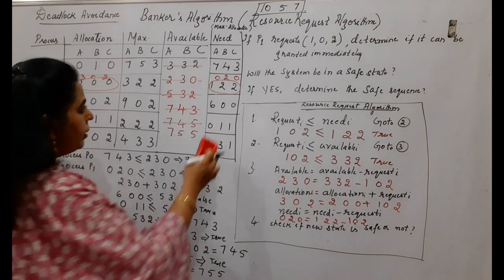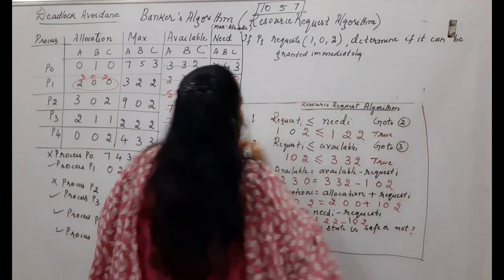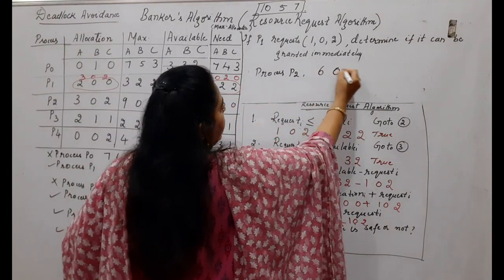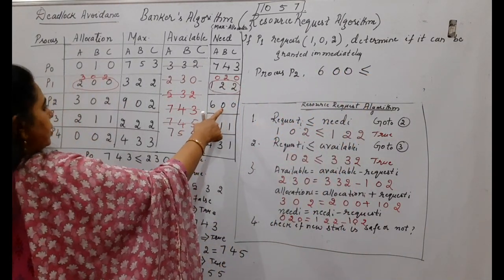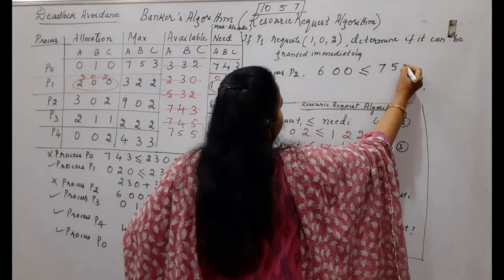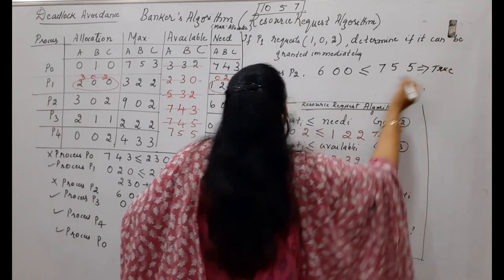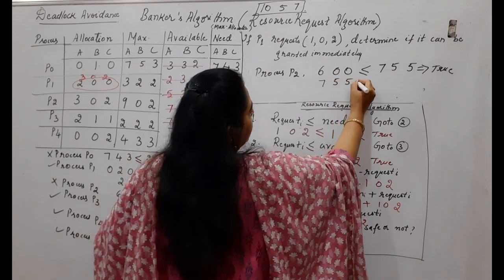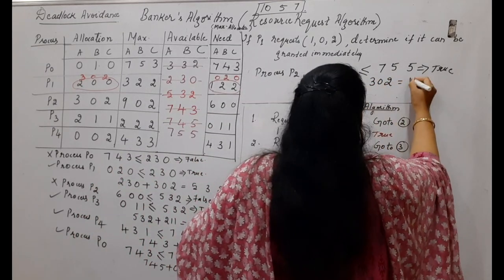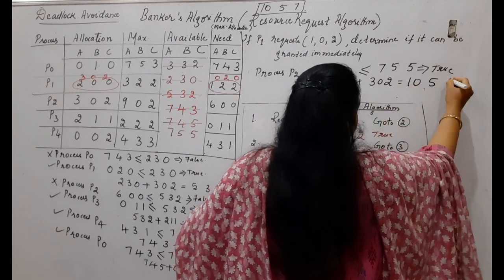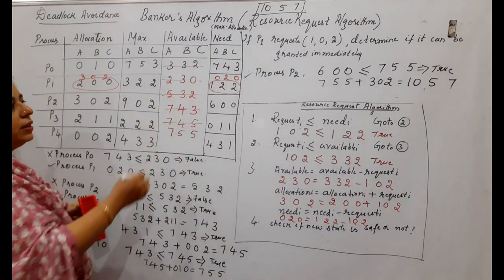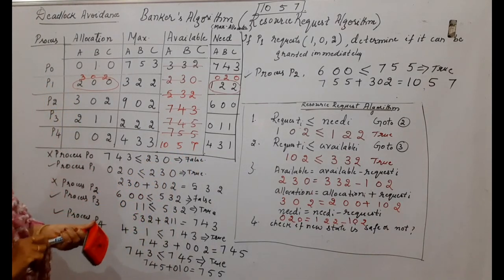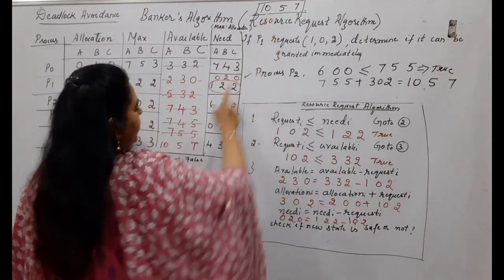Last pending process is P2. P2's need is 6,0,0 — is it ≤ available 7,5,5? Yes, it is true. P2 releases its allocation 3,0,2. New available: 7,5,5 plus 3,0,2 equals 10,5,7. P2 has also completed. The final available 10,5,7 matches our initial total calculation, confirming the answer is correct.